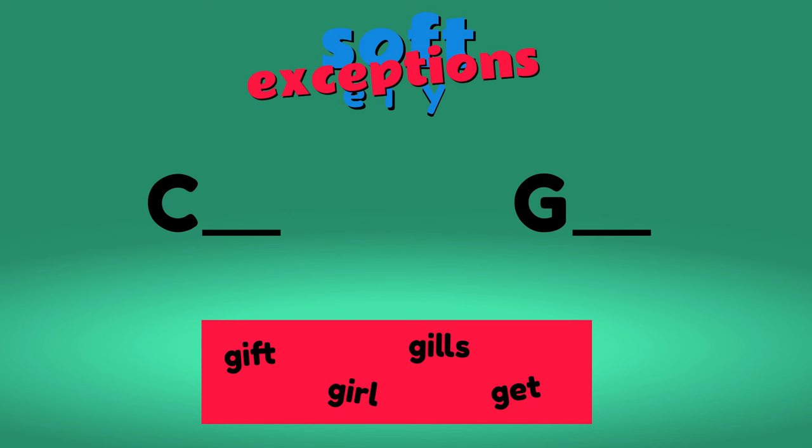In each word, the letter after the G suggests it should make a soft sound. However, they each make a hard sound.